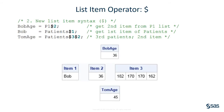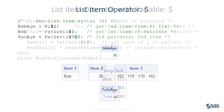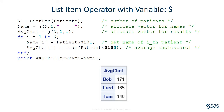Feature number two. You can use the dollar sign operator to specify items in a list. For example, the age field is the second item in the list named P1. So P1 dollar sign two returns the patient's age. Similarly, the syntax patients dollar sign one returns the first patient in the list of patients. That patient is Bob. You can use the list item operator more than once. For example, the third statement on this slide shows how to extract the second item from the third patient in the list.